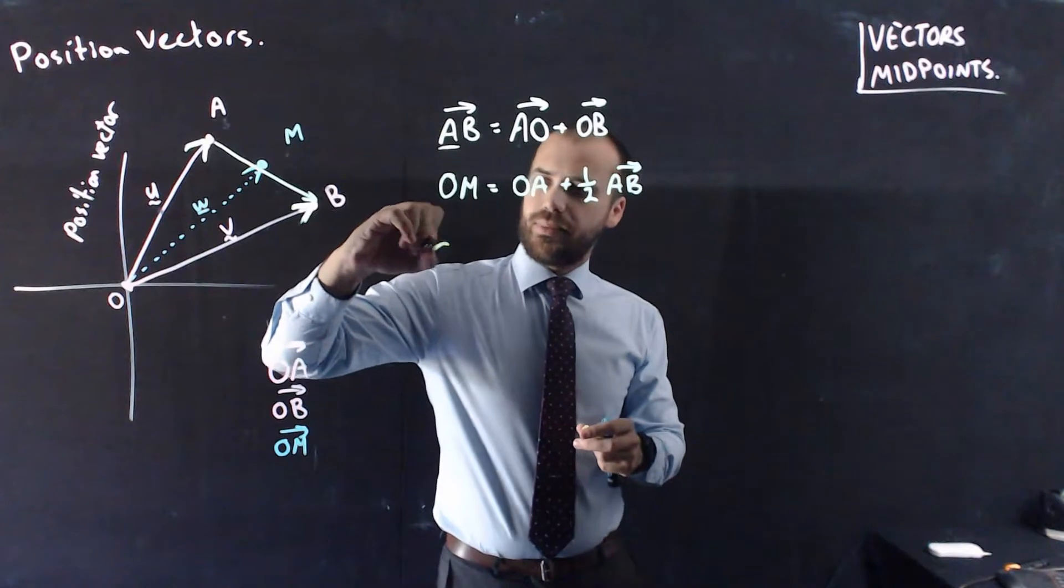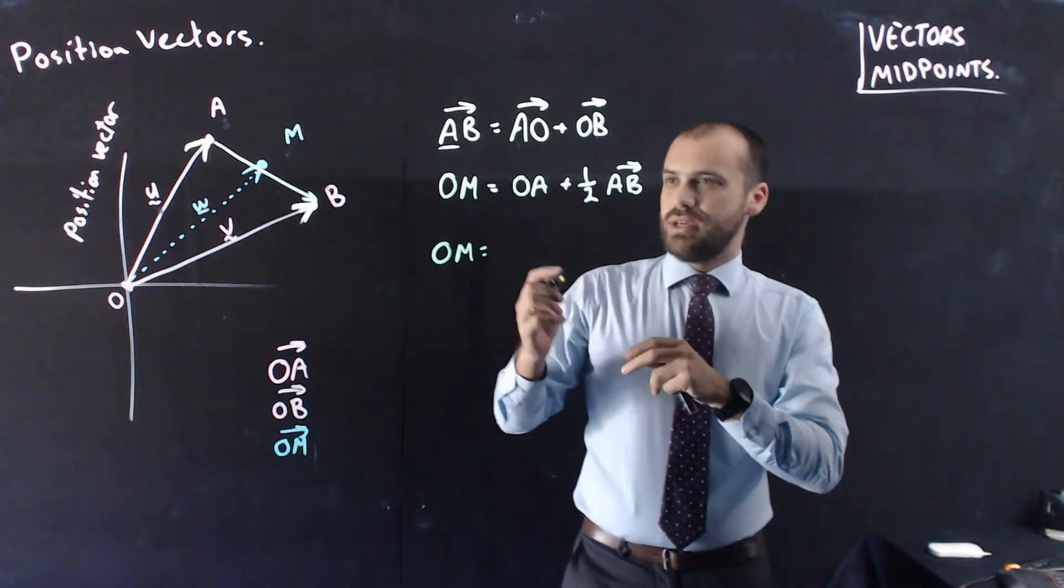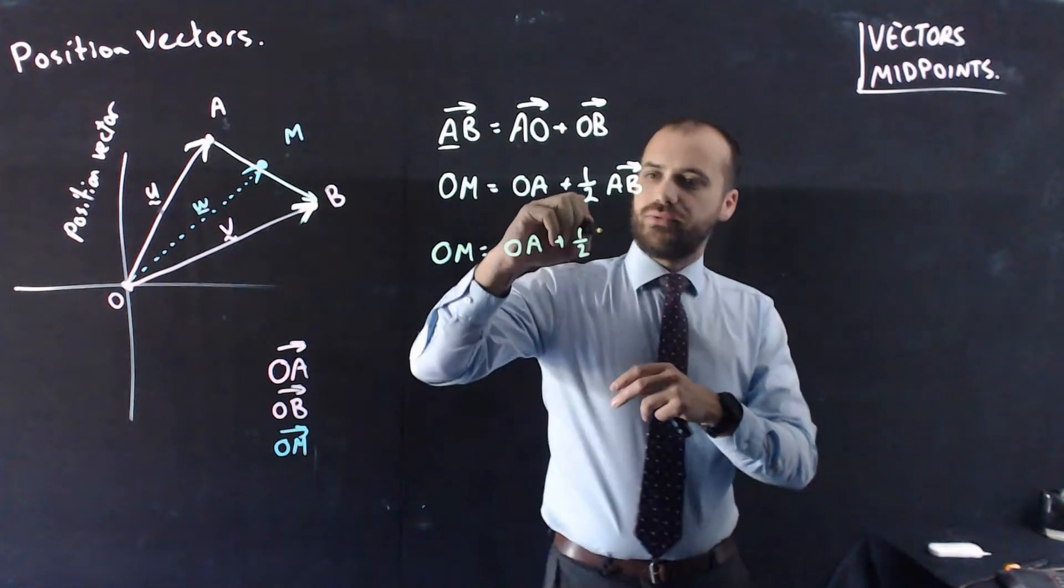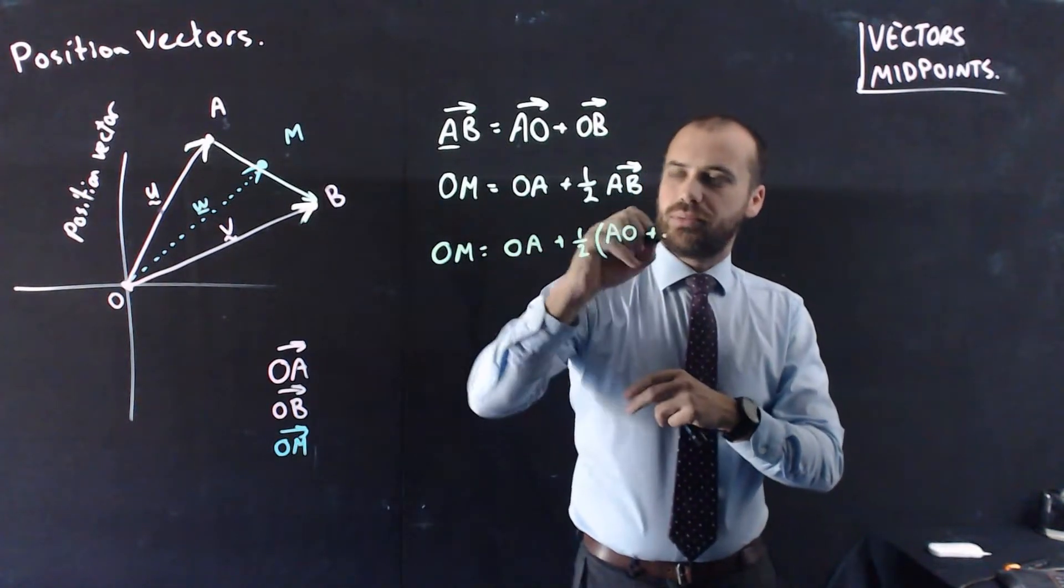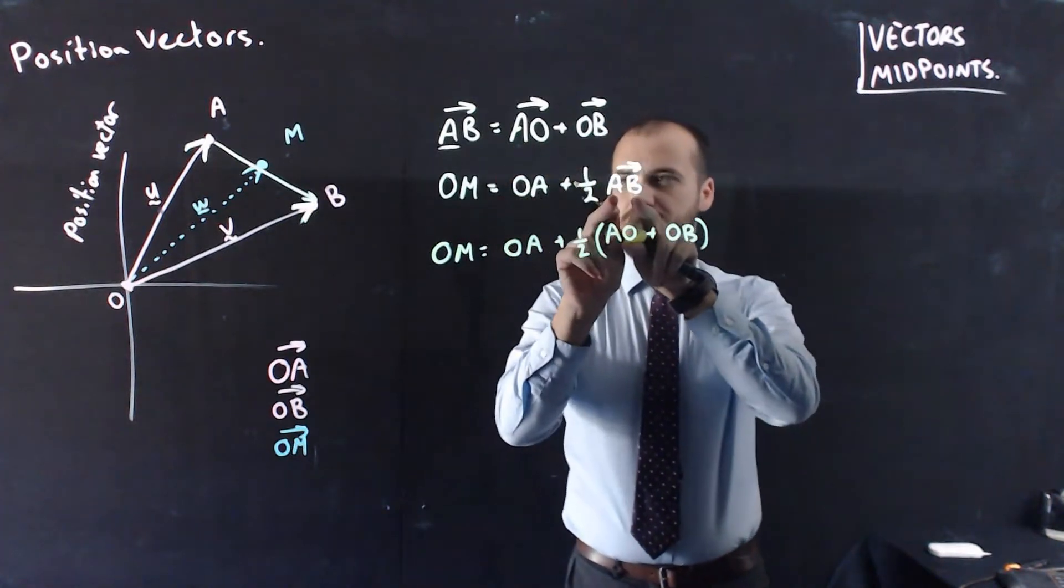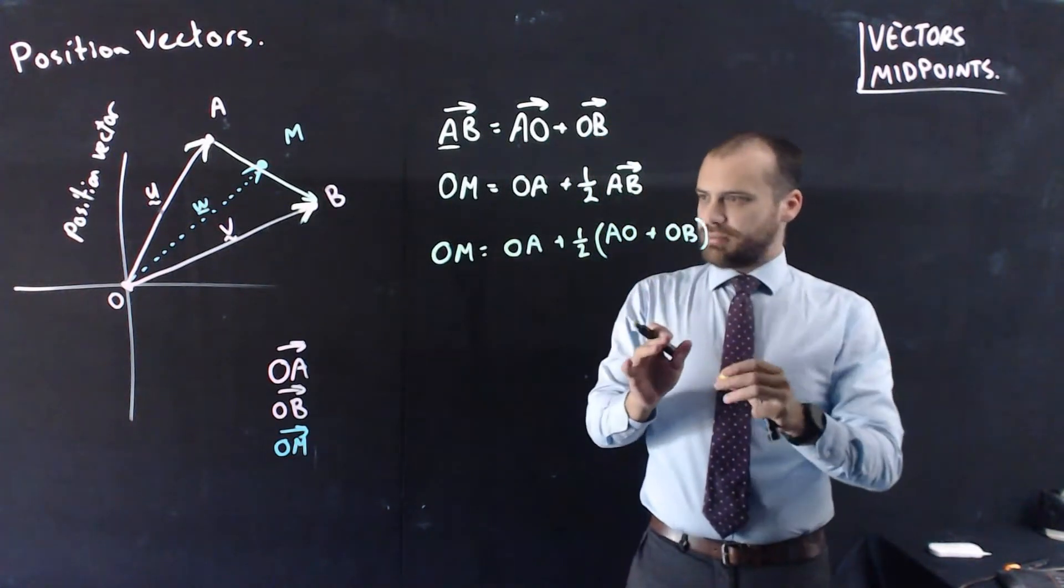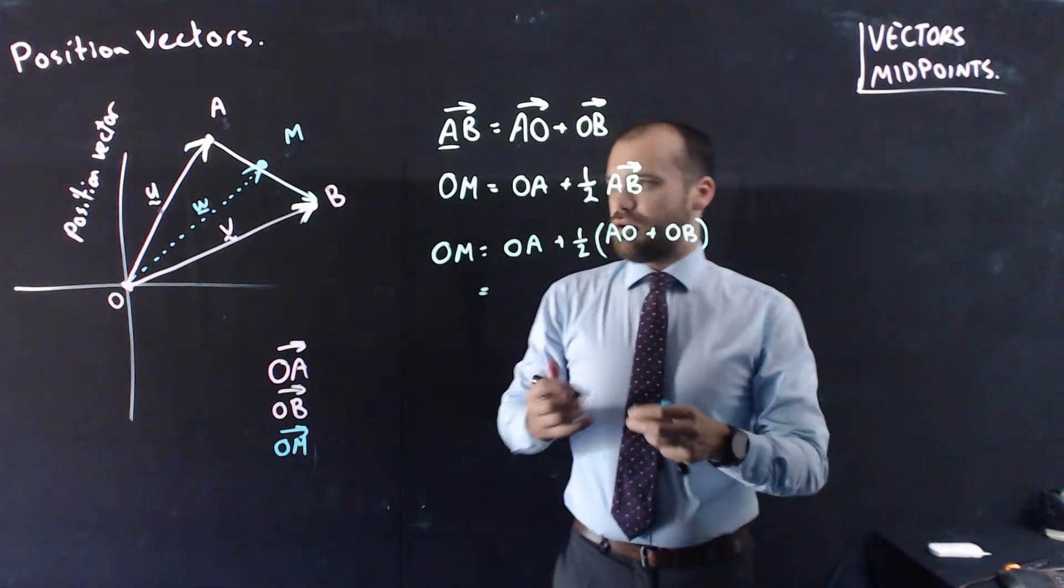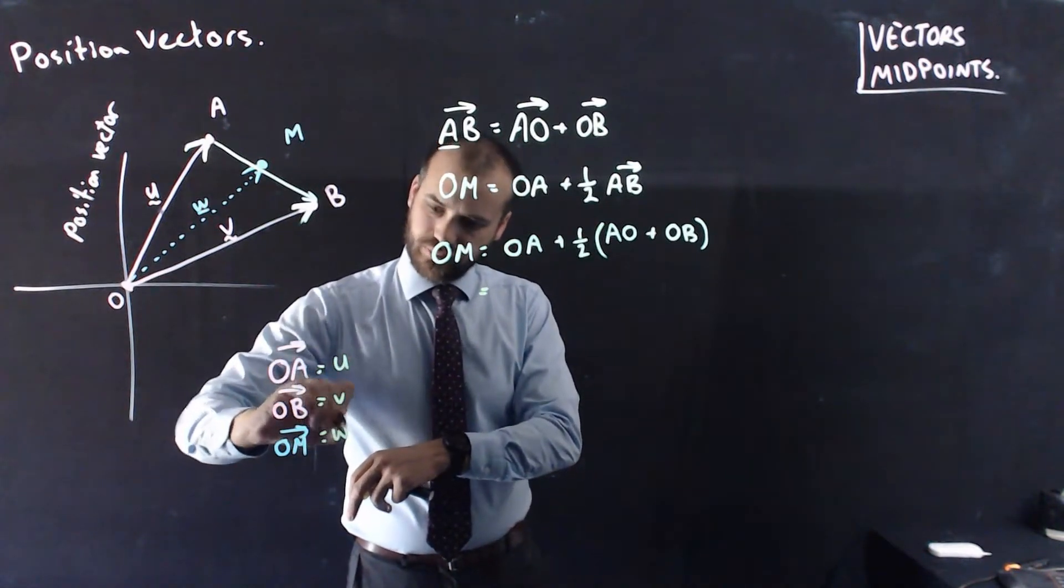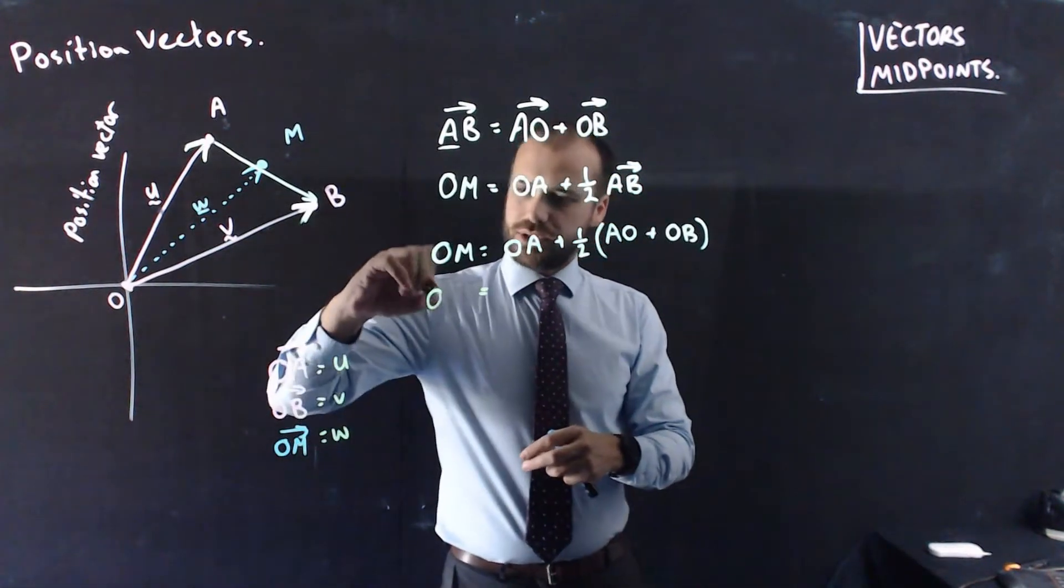So, we can say that OM, the midpoint position vector between two other position vectors, is equal to OA plus half of AO plus OB. So, that's just subbing in this formula into AB there. Okay, now I'm going to get rid of all the OAs and OBs and things like that, and I'm going to think in terms of U and V. I won't use W for the OM. I'll still use the midpoint there.